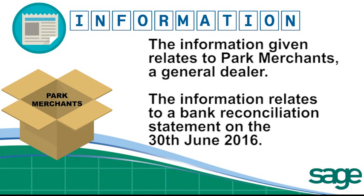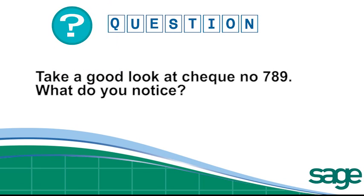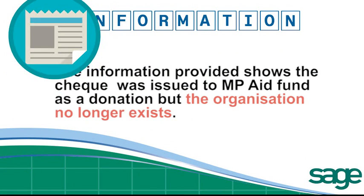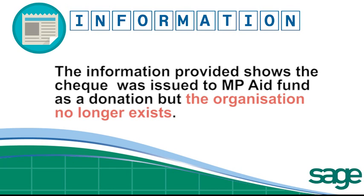The information we've been given relates to a general dealer, Park Merchants, and their bank reconciliation statement of 30 June 2016. Our first question concerns check number 789. Now what is the first thing you should notice? That's right — it is stale. It is dated the 25th of December and we're at the end of June. It is already six months old. The check was issued to MP Aid Fund as a donation, but we're told the organisation no longer exists.